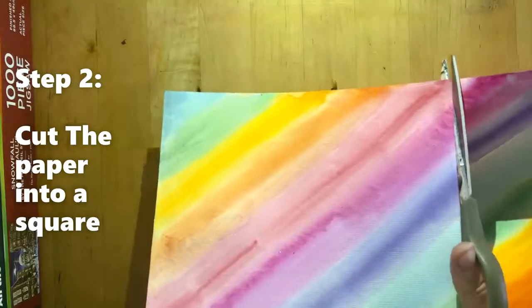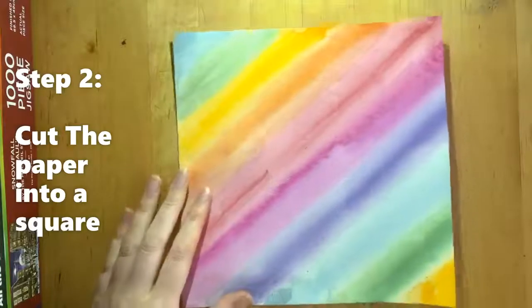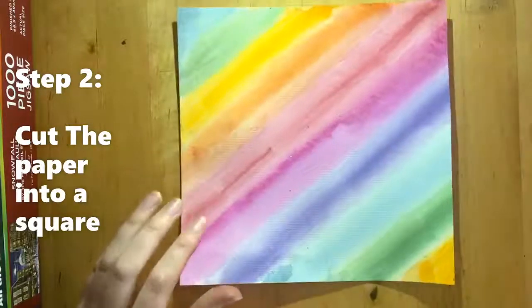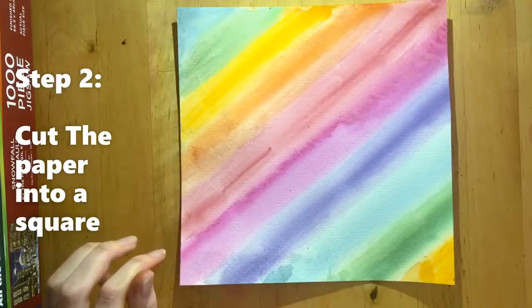It doesn't have to be perfect. Okay, there we go. We've got a rainbow square.